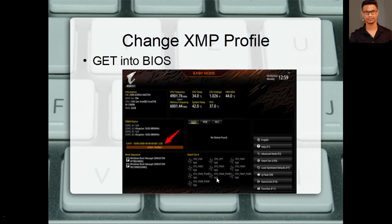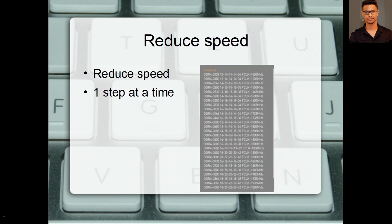In that case, what are you going to do? You're going to get into your BIOS — restart your computer and press the Delete key or F2 key to get to the BIOS. These days you can change the XMP profile from easy mode, but I believe you still have to go to advanced mode and reduce the RAM speed a little. For instance, your RAM is supposed to run via XMP at 3200MHz, but at 3200MHz your RAM is failing. So instead of running at 3200MHz, you're going to run at 3100MHz.